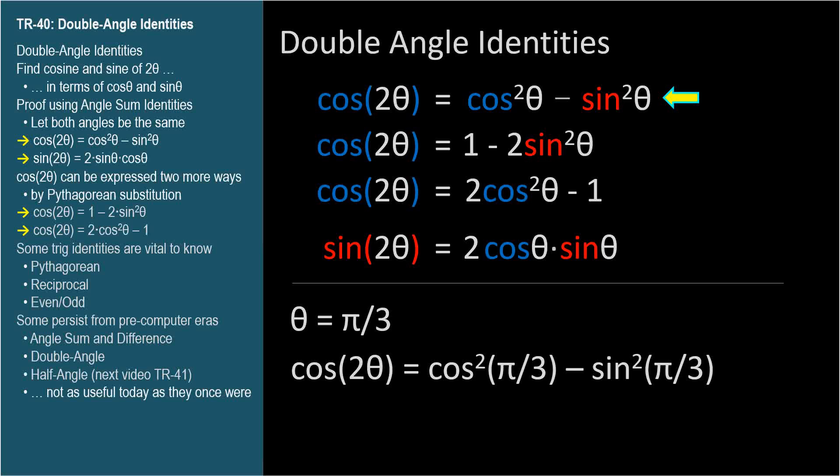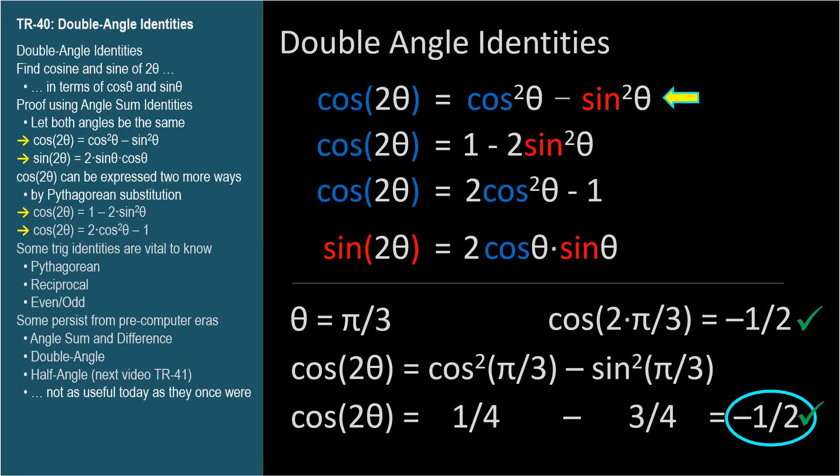we know its cosine is 1 half and its sine is square root of 3 over 2. Plugging in these values, we get 1 fourth minus 3 fourths, which is negative 1 half.